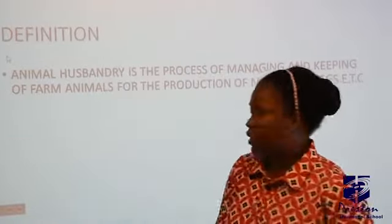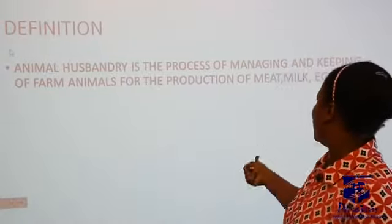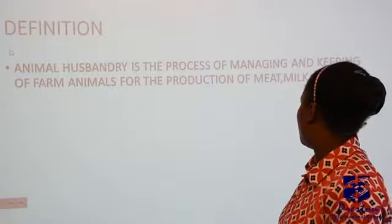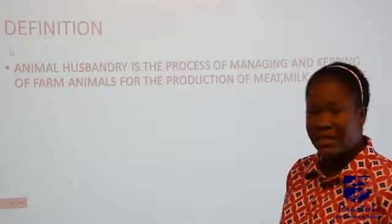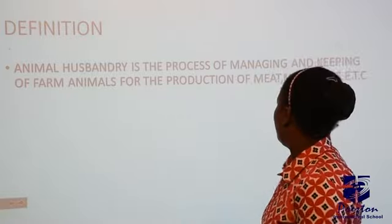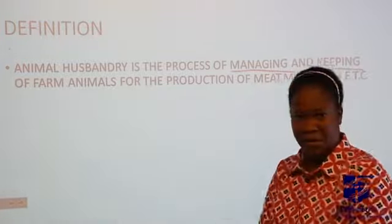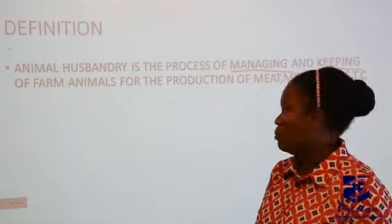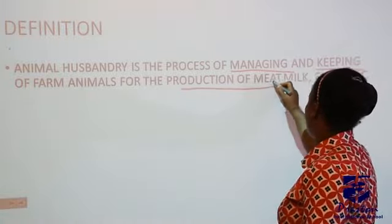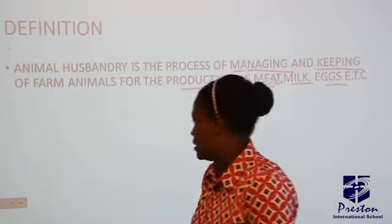Definition of Animal Husbandry: it is the process of managing and keeping of farm animals for the production of meat, milk, and eggs. You manage them and you keep them for the production of meat, milk, egg, and others.